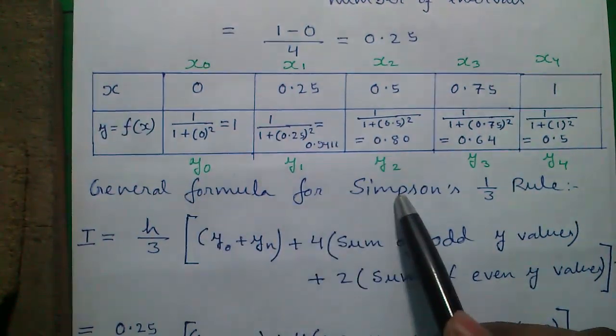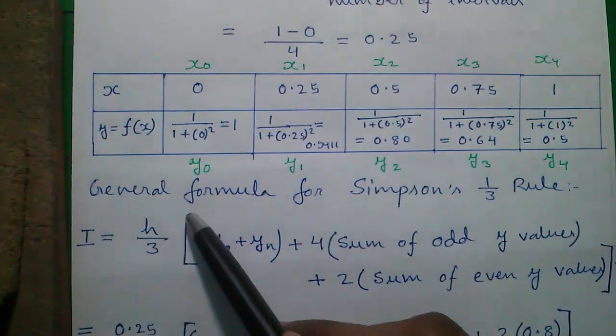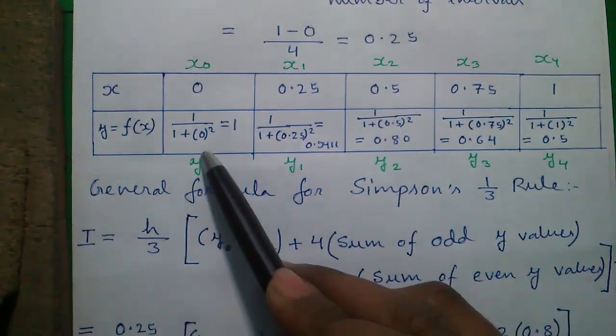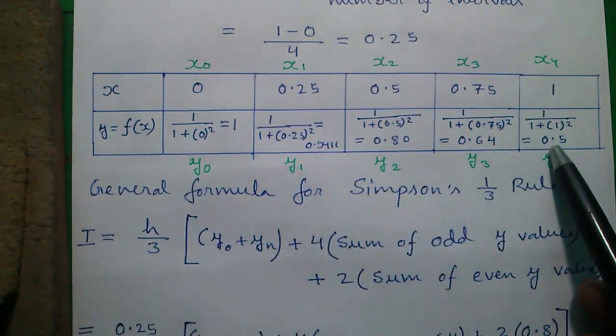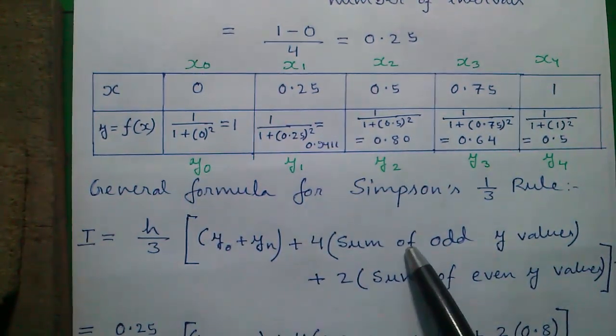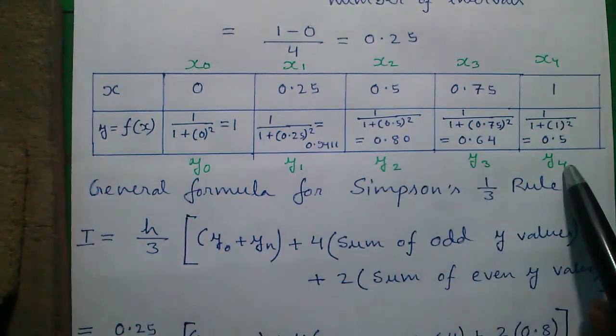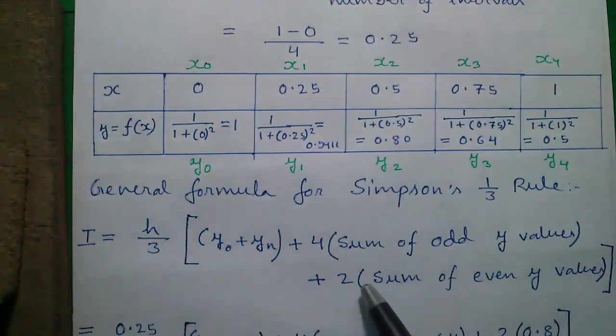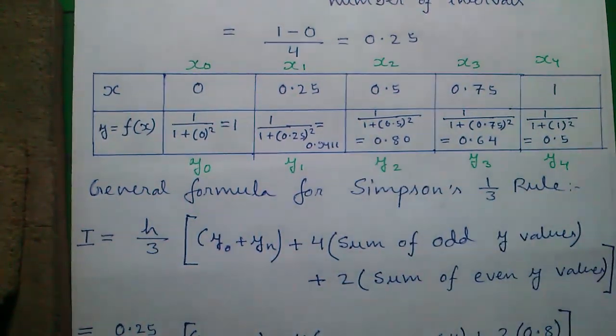Now, the general formula for Simpson's one third rule: I equals to h by 3 into y0 plus yn. y0 is the starting value of y and yn is the last value of y. Plus, 4 into sum of odd y values. Odd y value means y1, y3, y5, etc. Plus, 2 into sum of even y values. Even y value means y2, y4, y6, etc.